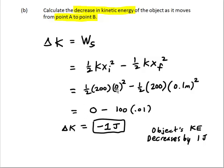X initial is 0 because that spring is not compressed at all initially. And x final, 0.1 meter, that's given by the graph. And end up with negative 1 joule as the work done by the spring. So that's also the change in kinetic. So it loses 1 joule. So AP board did not care if you left it as negative 1 joule or you said it lost 1 joule.